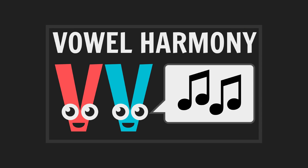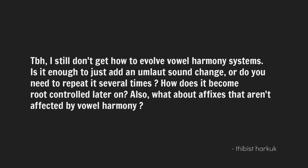Good morning, this is a follow-up to the main video on how to evolve vowel harmony systems. If you haven't already seen that video, go check it out, otherwise none of this is going to make any sense. To be honest, I still don't get how to evolve vowel harmony systems. Is it enough to just add an umlaut sound change, or do you need to repeat it several times? How does it become root controlled later on? And what about affixes that aren't affected by vowel harmony? Let's go through this in more detail.